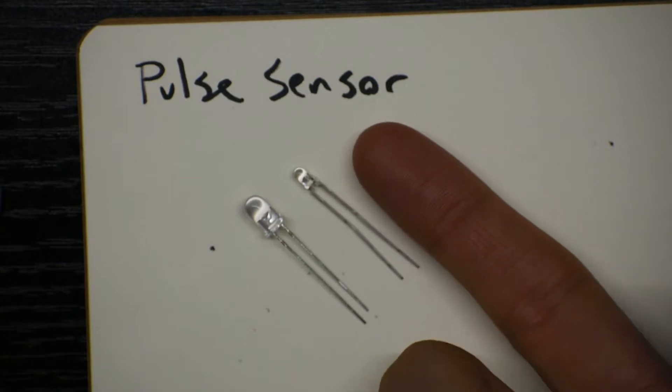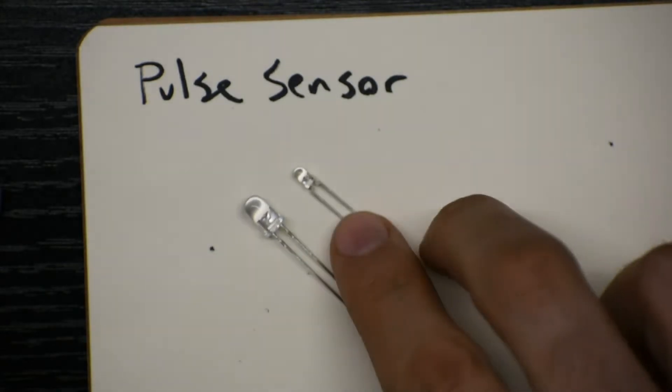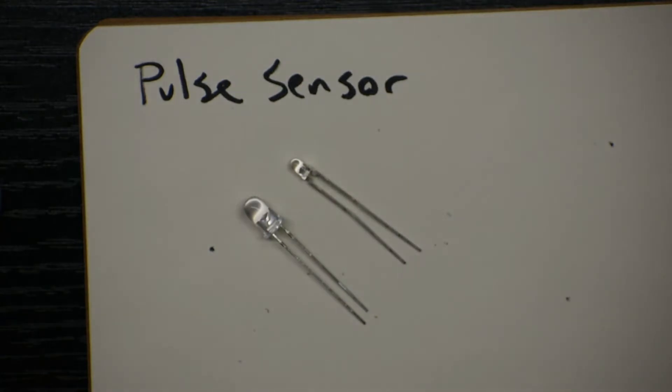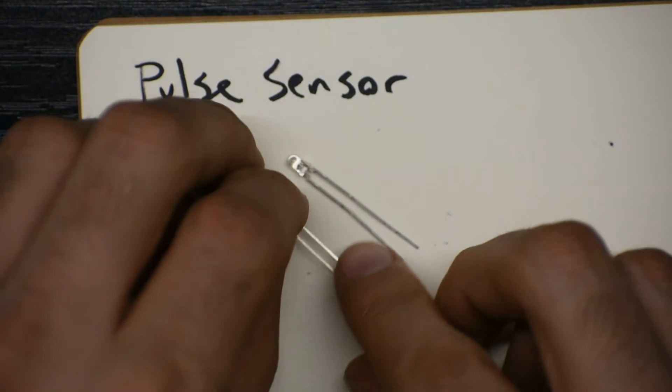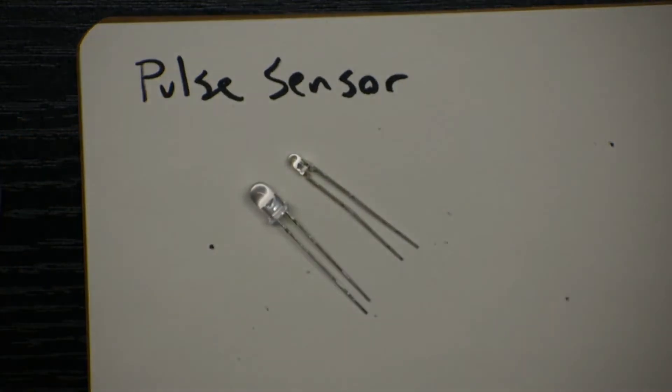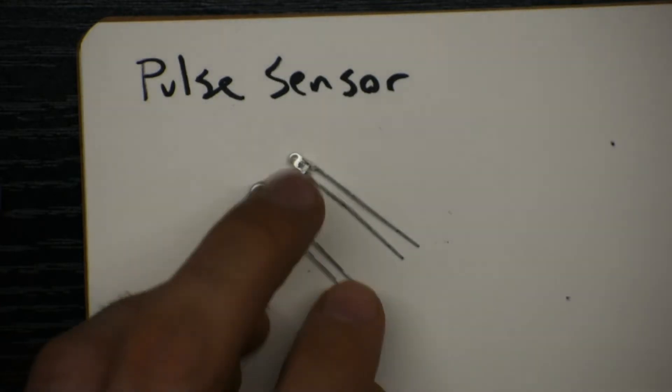So how are we going to detect that? We've got our phototransistor, so that can see changes in light or just light level. And we can also shine light into our finger using this super bright red LED. These are the same two components we used in an earlier lab, the feedback lab, to demonstrate how negative feedback worked with the op amp.